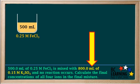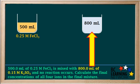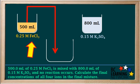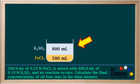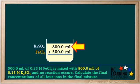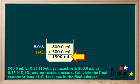800 milliliters of 0.15 molar K2SO4 is added to another beaker, and we'll also label that one. We get a third beaker, which is larger, and we pour the 500 milliliters of FeCl3 solution into it. Then we pour the 800 milliliters of K2SO4 solution into the same beaker. We can calculate the total volume by adding 800 milliliters to 500 milliliters, which gives a total of 1300 milliliters for the final volume of the solution.